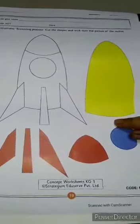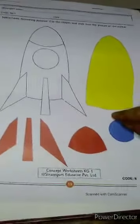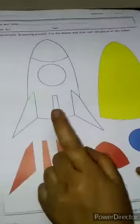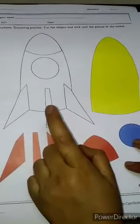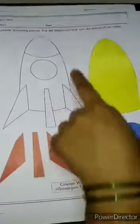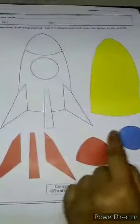Kids, look at this worksheet. Which picture is this? This picture is a rocket. What is this? This is rocket parts.